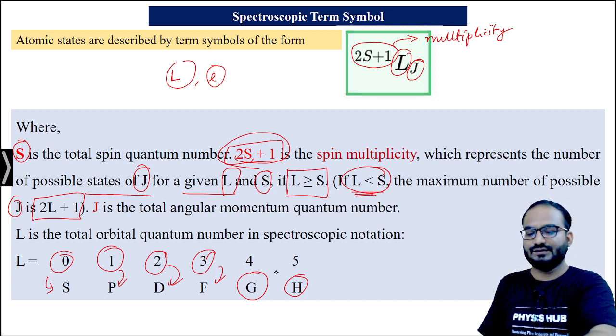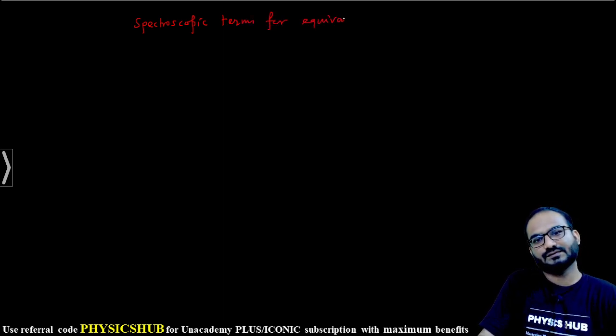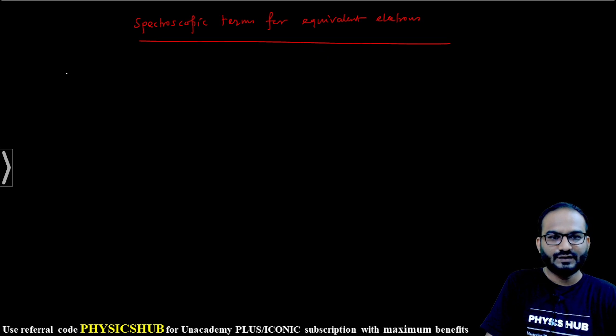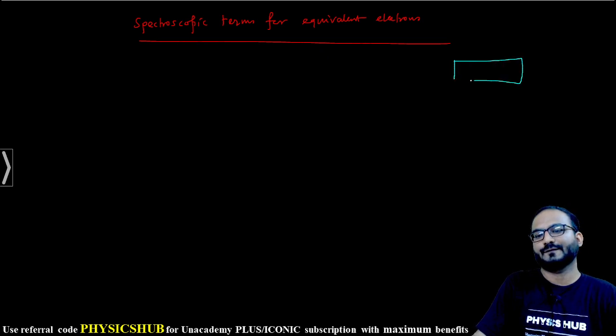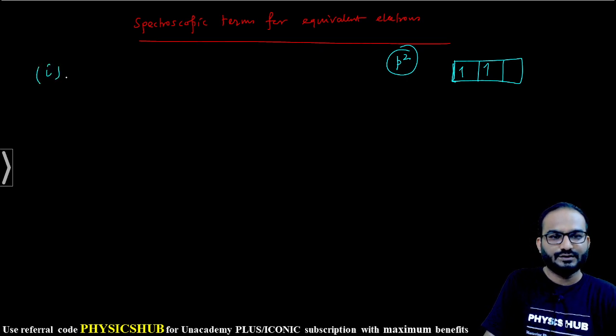Today in this video we're going to talk about spectroscopic term symbols for equivalent electrons. First you need to understand what are equivalent electrons. Let's say we have the P subshell with P². One electron will be here, another one will be here. These are equivalent electrons because they are from the same L value. When two electrons share the same L value, those are equivalent electrons.